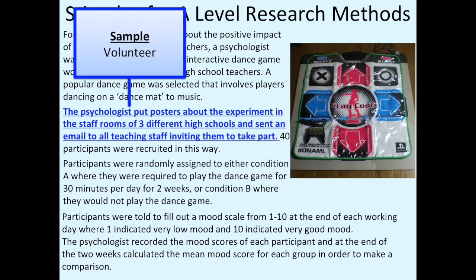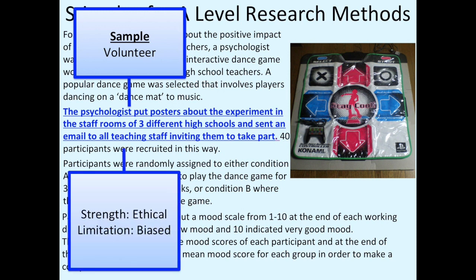Then I would underline where it says the psychologist put posters about the experiment in the staff rooms of three different high schools and sent an email to all teaching staff inviting them to take part. This tells me it's a volunteer sample. A strength of a volunteer sample is that it's ethical because people have chosen to take part. However, a limitation is that you end up with a biased sample because only a certain type of person will be motivated to apply to be in it.